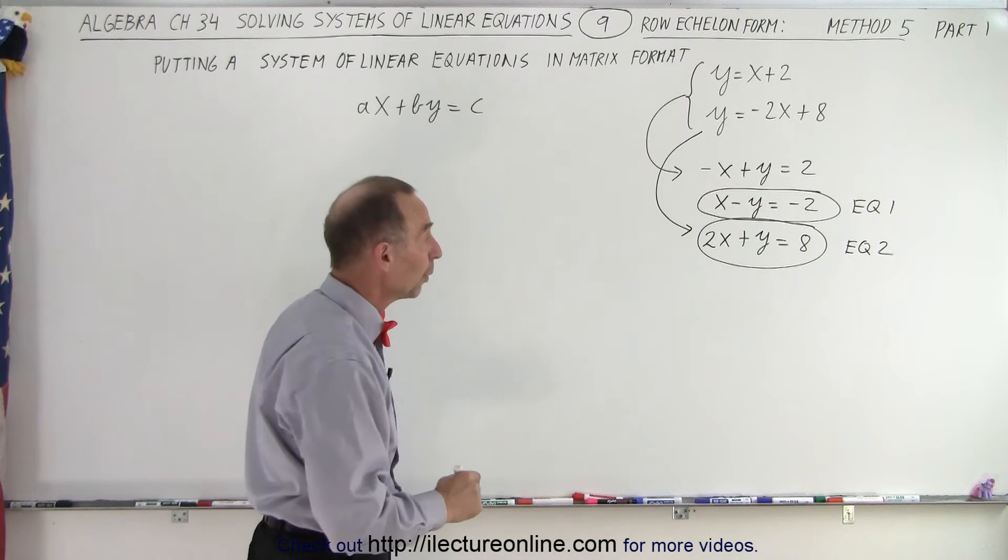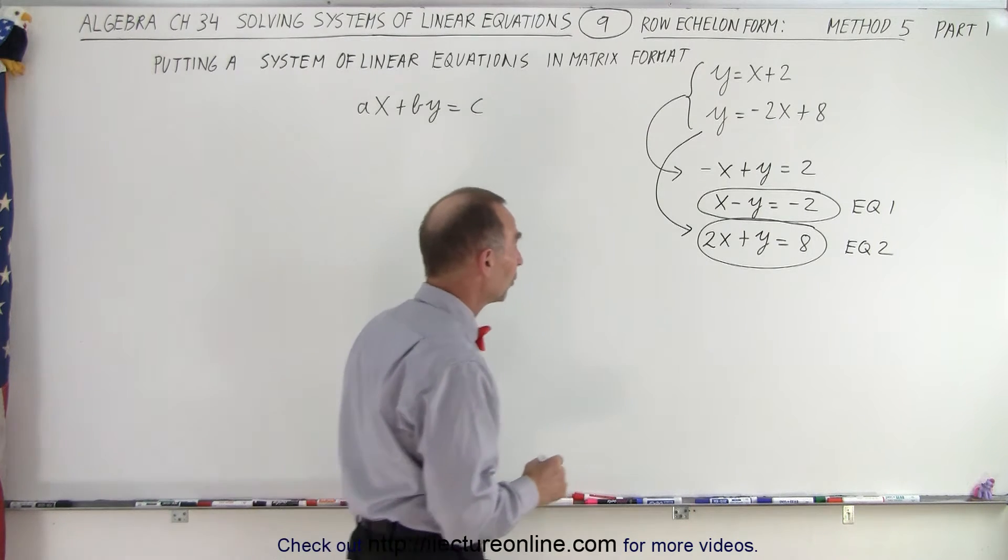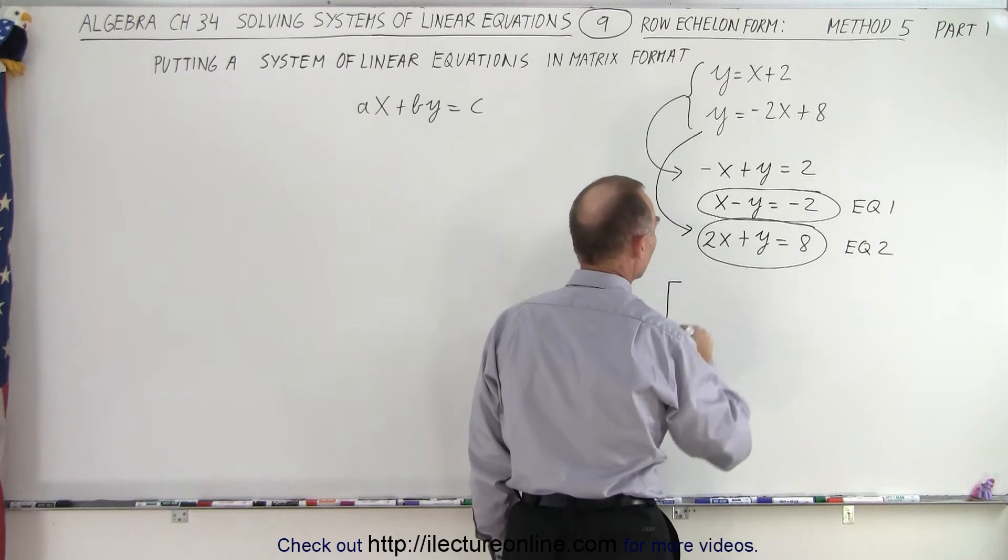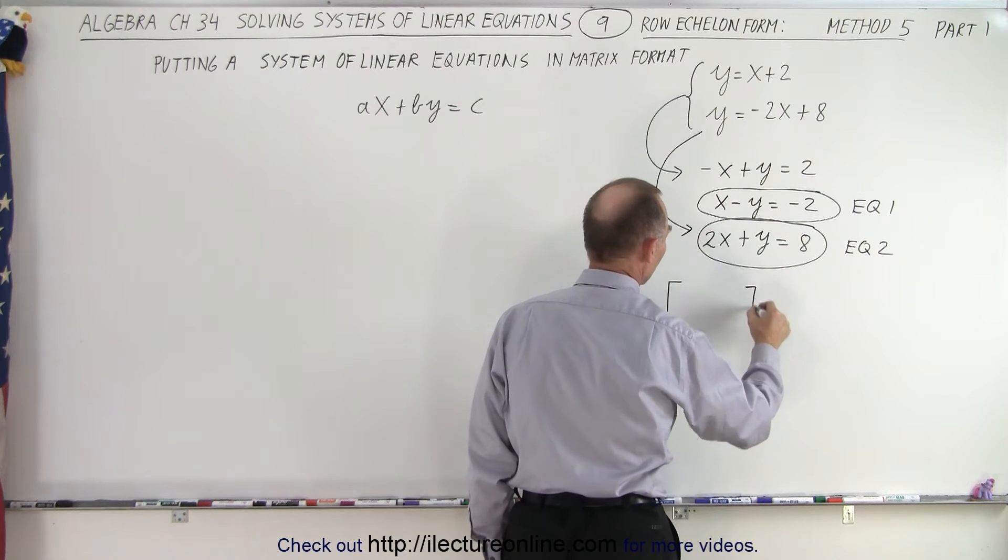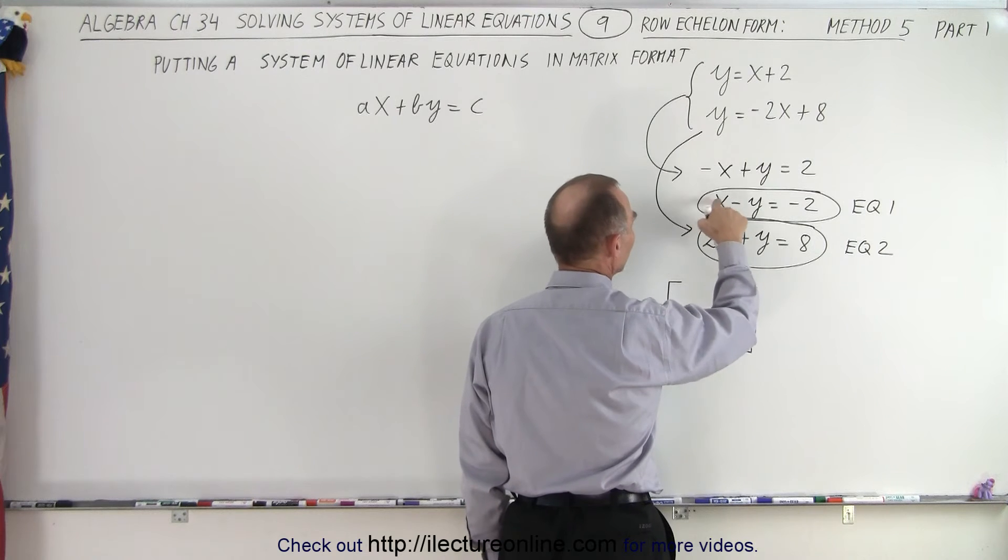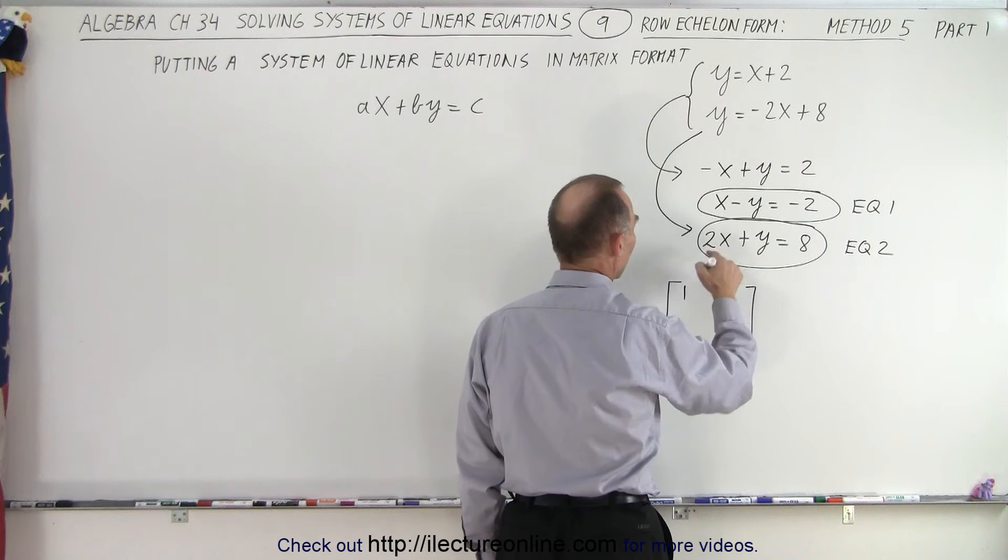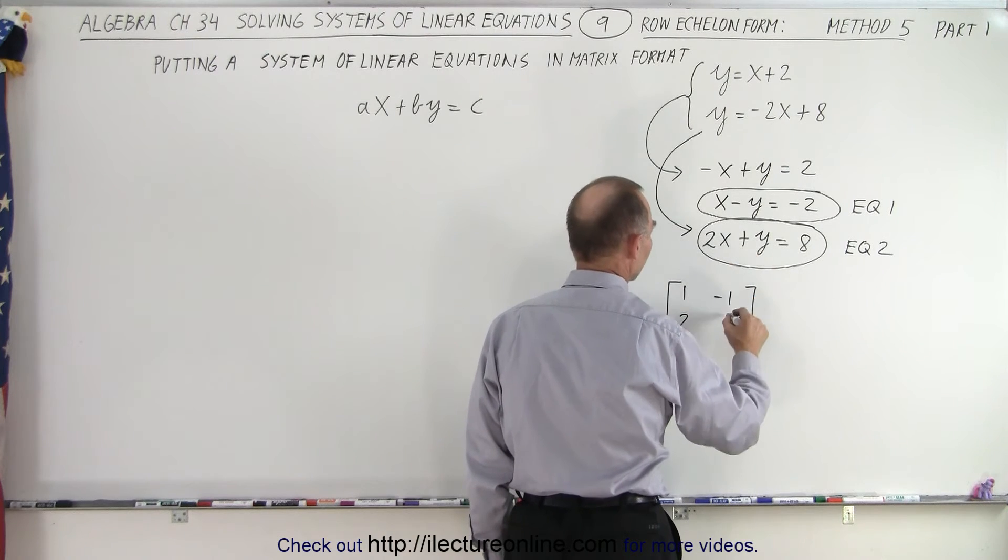Now we can write this as follows. This can be represented in matrix format. We're going to take the coefficients of x and y: we have 1 for x, -1 for y; we have 2 for x and 1 for y.